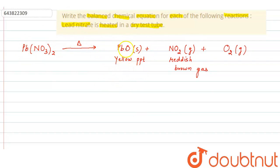Yellow PPT will be obtained due to the presence of lead oxide. Reddish brown gas will be observed due to the presence of nitrogen dioxide gas. And also, oxygen gas will also be liberated.